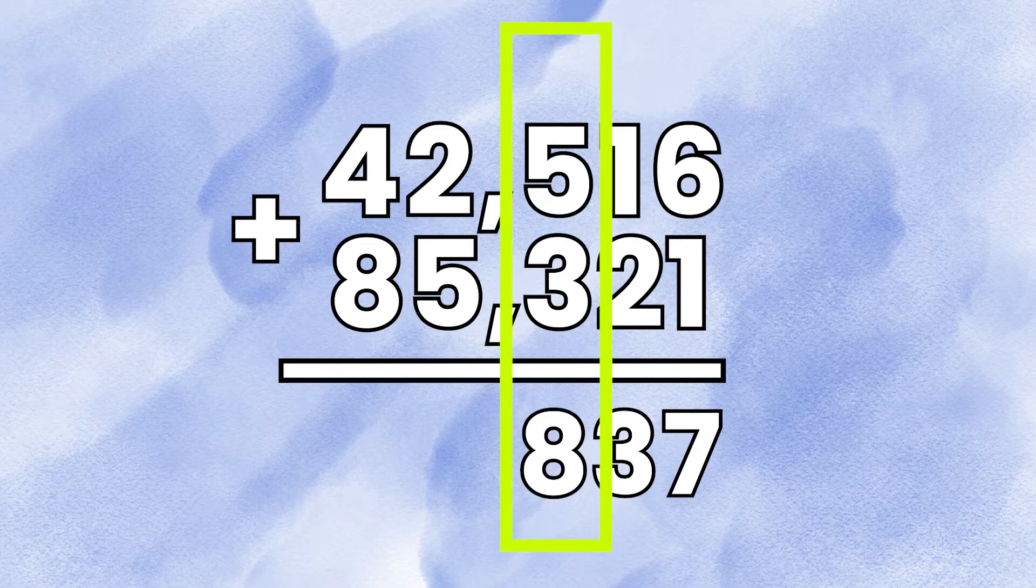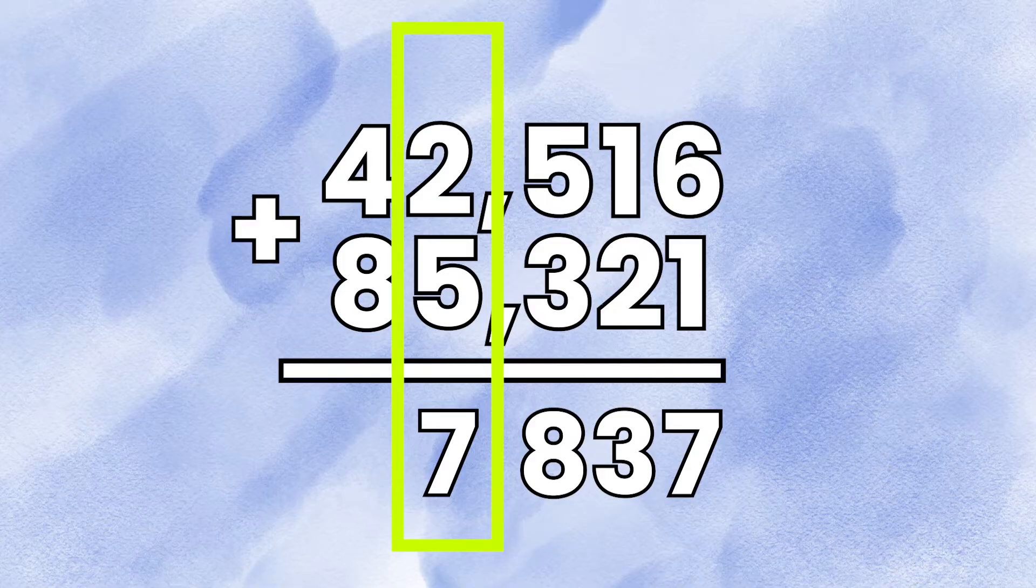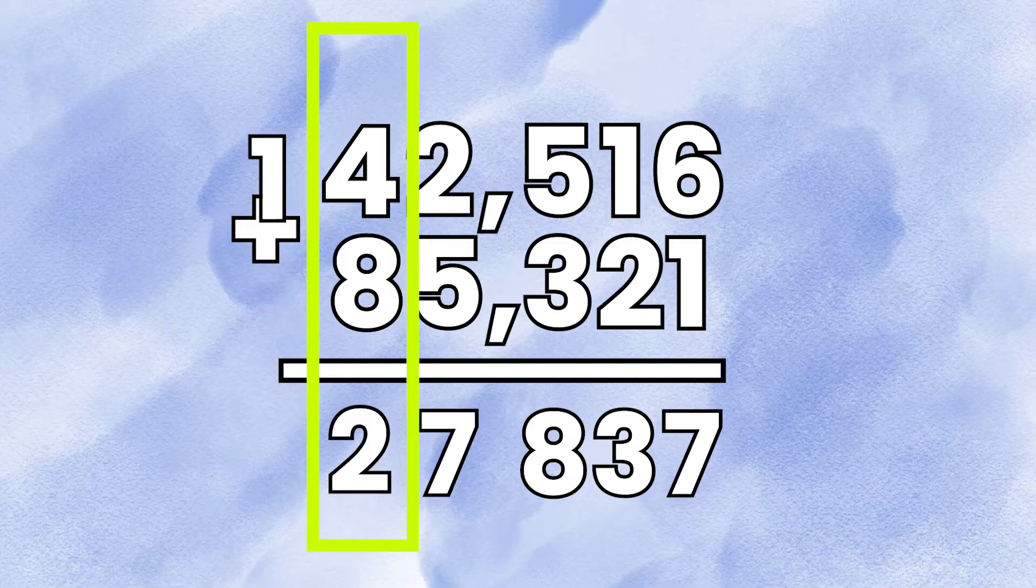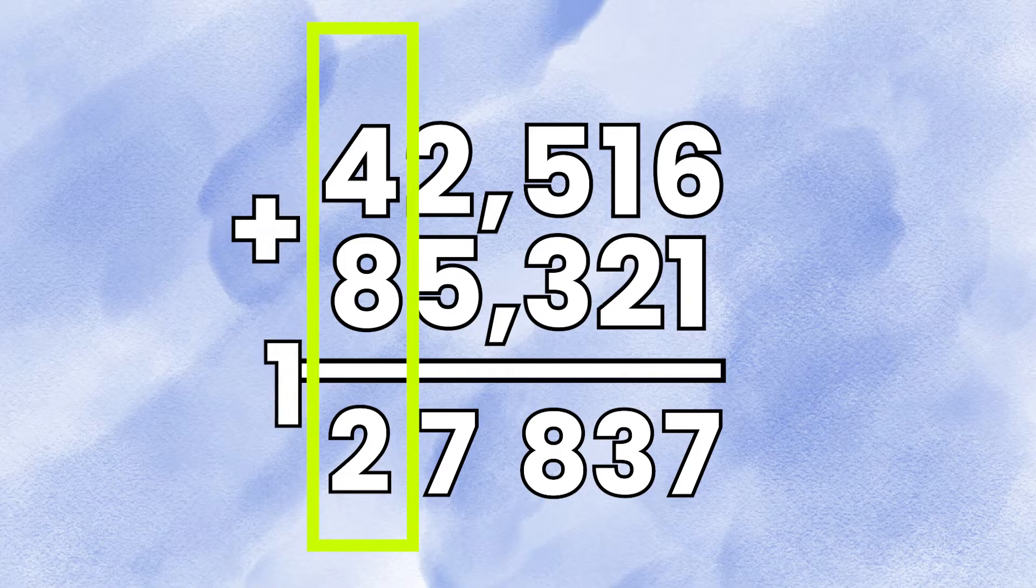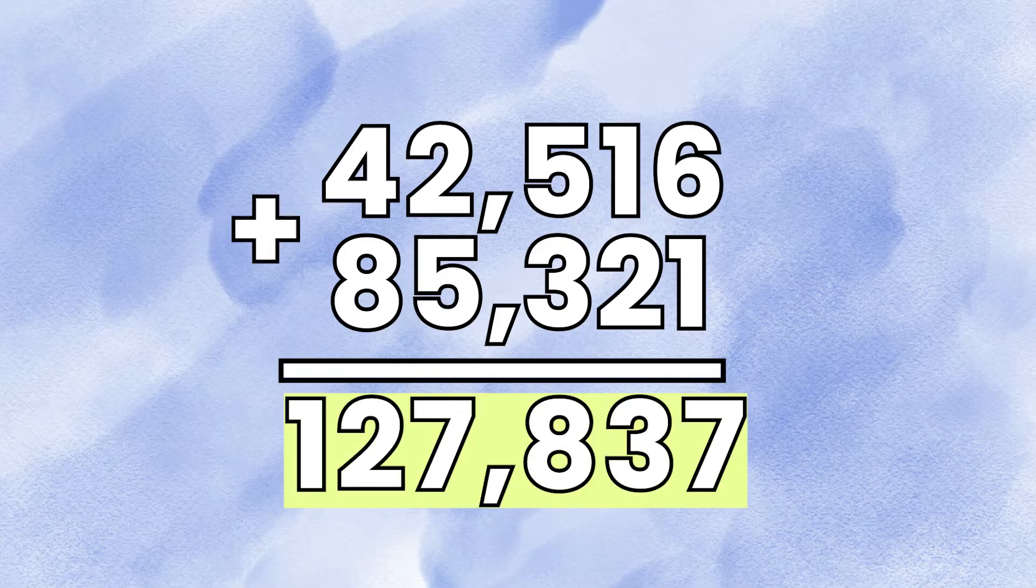5 plus 2 is 7, and 4 plus 8 is 12. We don't have to carry because there's not another place value. We can put the 12 there and it'll be 127,837.